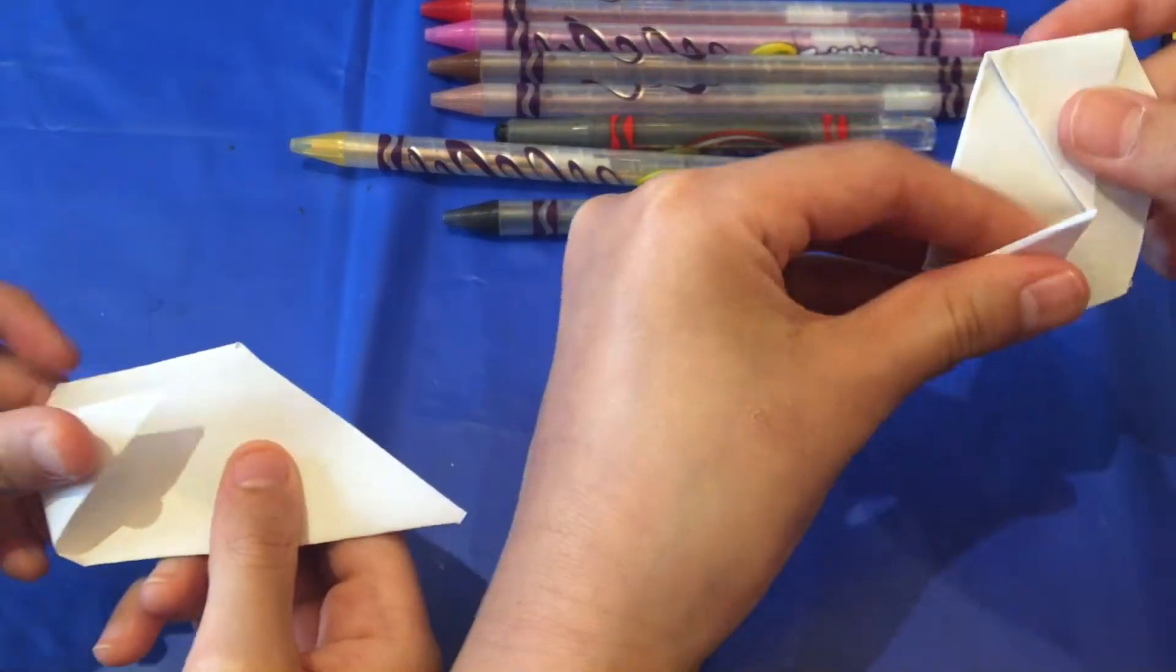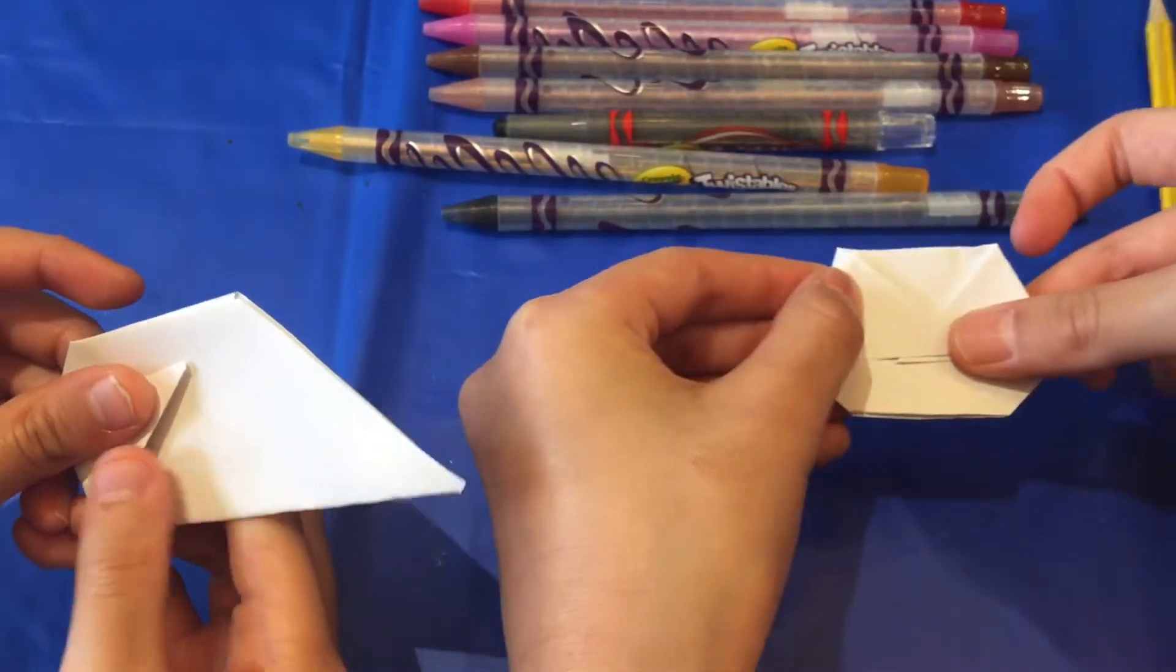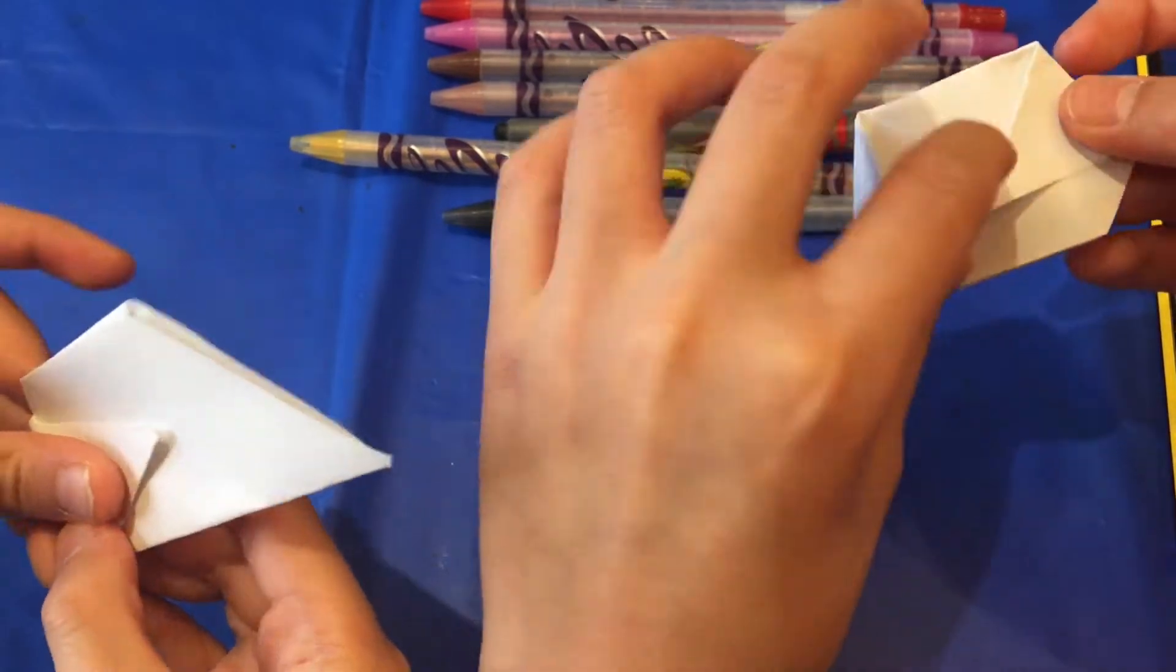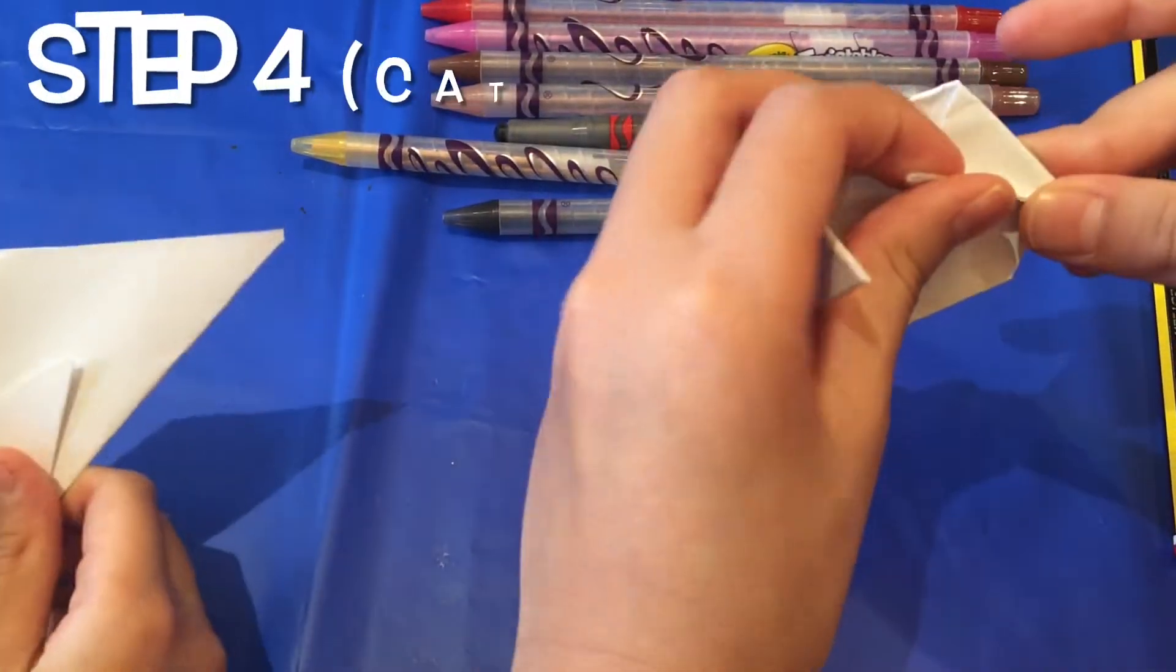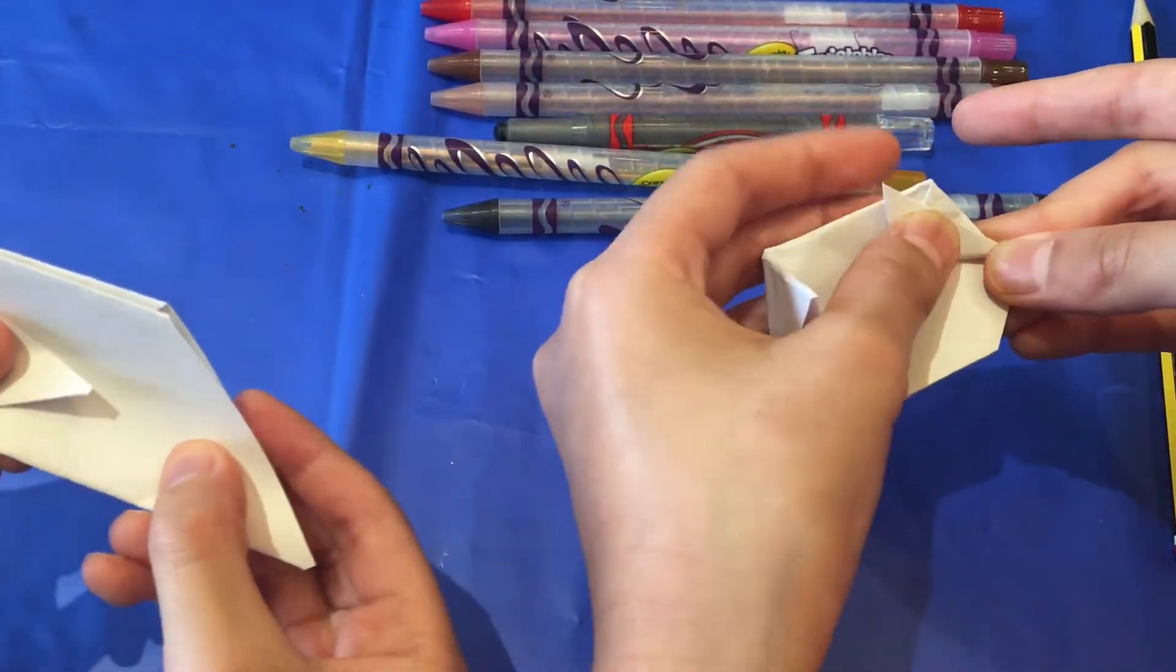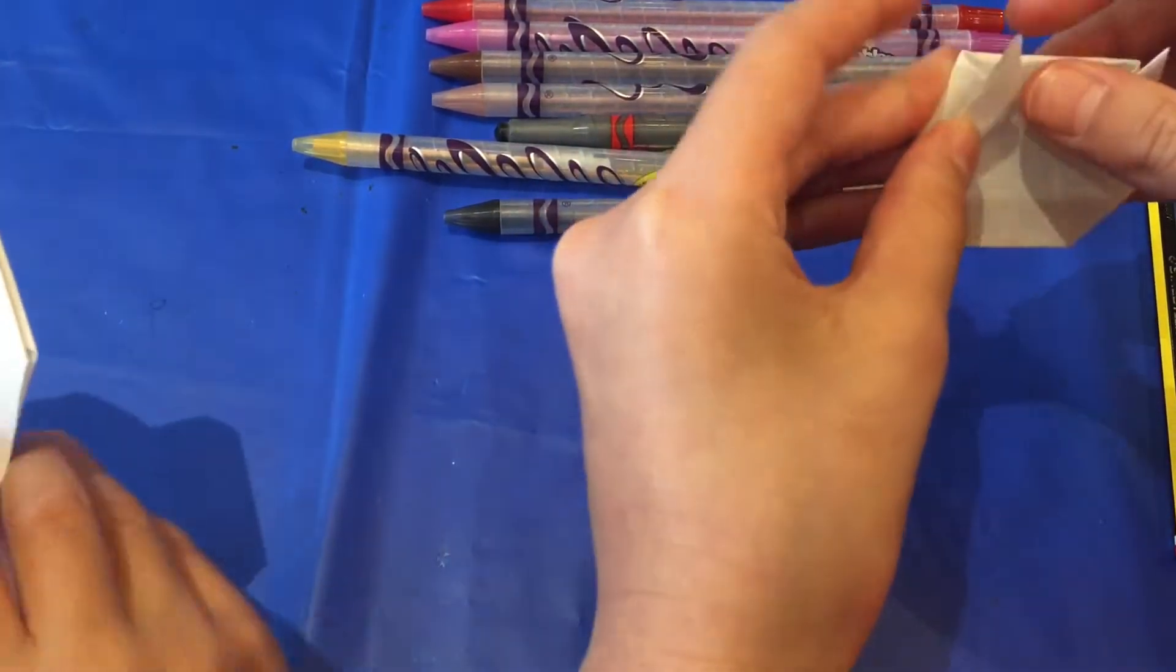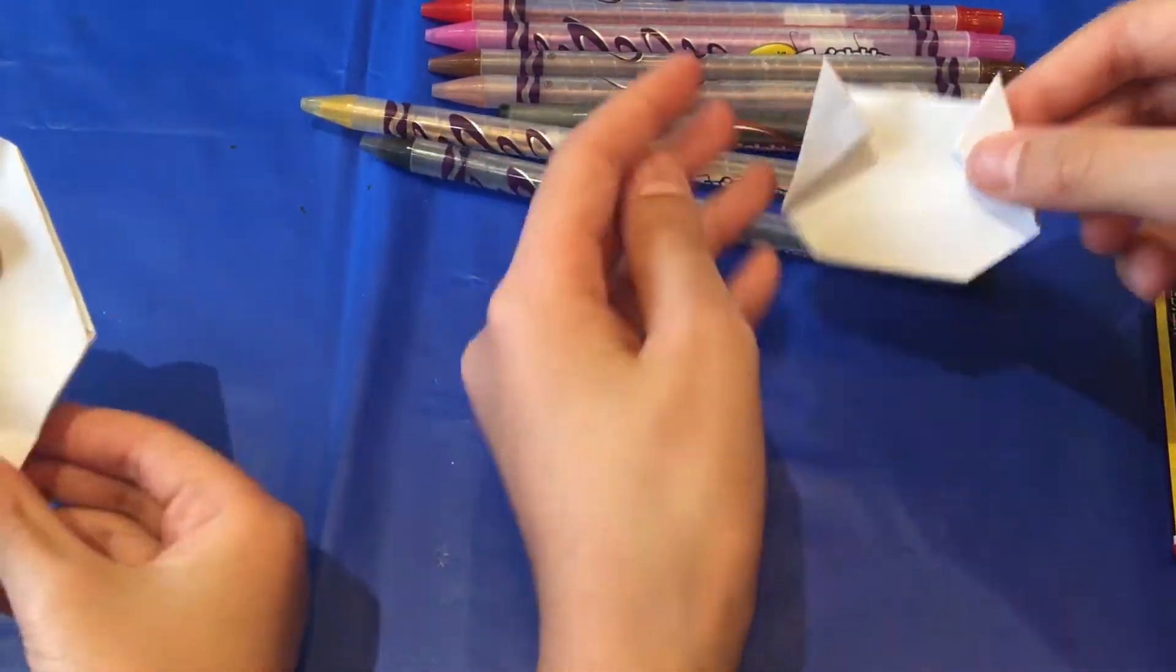And then you're going to fold the other side too into the middle. And then you're going to make this side connect here like that. And then you're going to do the same on the other side. And then there's your cat done.